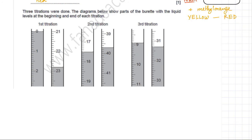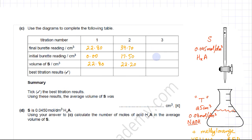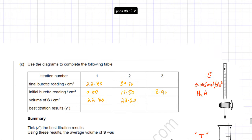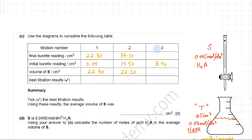For the third titration, the initial burette reading was 8.90 cm³ and the final reading was 31.30 cm³. Taking the difference: 31.30 minus 8.90 equals 22.40 cm³. So the volume of acid S added in the third titration is 22.40 cm³.